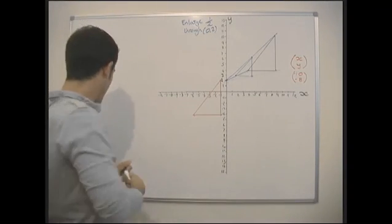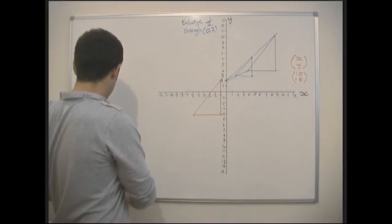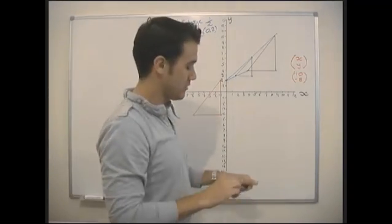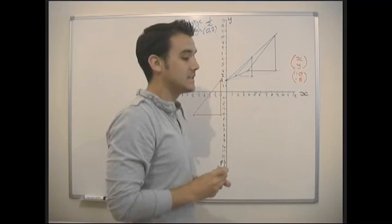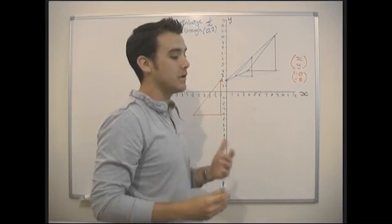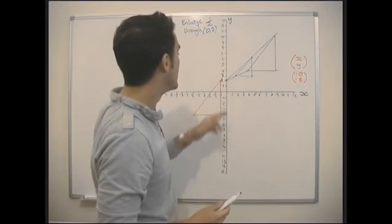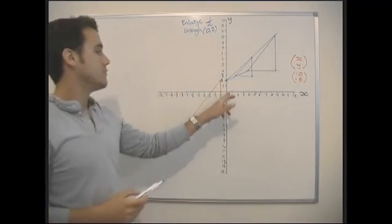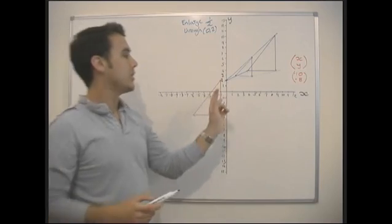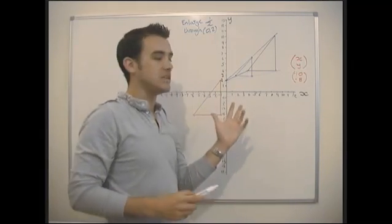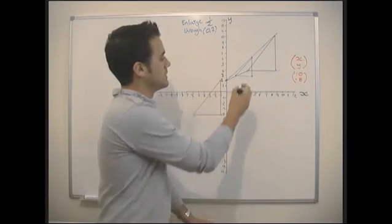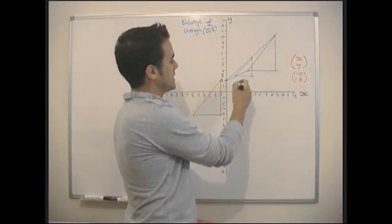Another thing we might do is rotate. We might rotate the shape about a certain point — often the origin. So let's say we're asked to rotate it by 90 degrees about the origin.